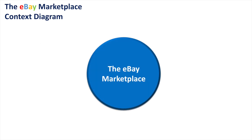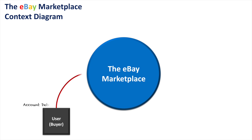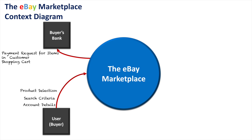Here is our eBay marketplace system. Looking at the user experience as a buyer: they enter their account details to access the system, they enter a search criteria to start looking for products, and then they make their product selections. After this, they purchase those products they've selected, and a payment request is sent to their bank. Their bank gives approval, and essentially they get a transaction receipt as their proof of purchase. This is pretty standard for any type of e-commerce online shopping system.